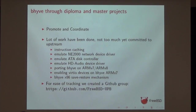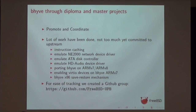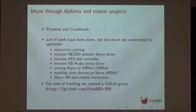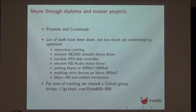For ease of tracking, we switched from SVN to Git. We created a GitHub group called FIBSD-UPB, which is basically a mirror of the FreeBSD repo. We also created branches for each project, so every work we are currently doing is in there — it's easy to rebase and create patches.